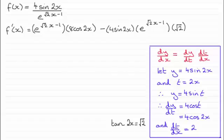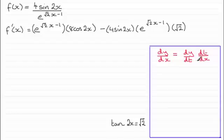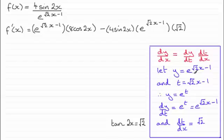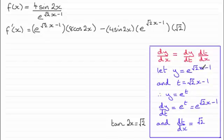Let me take you through that one more time. Chain rule: dy/dx equals dy/dt times dt/dx. Let y equal e to the power root 2x minus 1, and t equal root 2x minus 1, so y equals e to the power t. Differentiating e to the power t with respect to t gives e to the t. Replacing t with root 2x minus 1 gives dy/dt equals e to the power root 2x minus 1. Then dt/dx: differentiating root 2x minus 1 with respect to x gives root 2. Multiplying these two results together gives the differential of e to the power root 2x minus 1.